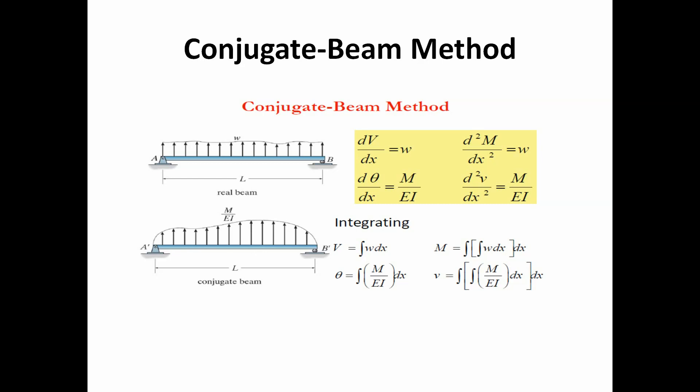So what do we do in the conjugate beam method? We convert the real beam into the conjugate beam. We need to know the conditions — the bending moment diagram of the real beam becomes the loading diagram of the conjugate beam.